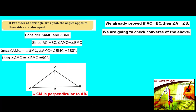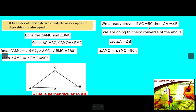We have to verify whether AC is equal to BC. For this, we first take angle A is equal to angle B. We know that these two angles are equal, that is, angle AMC is equal to angle BMC, which is equal to 90 degrees. So these two angles are equal: angle A is equal to angle B.